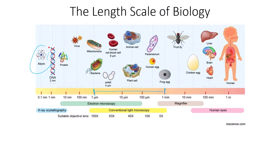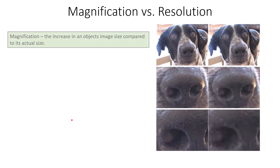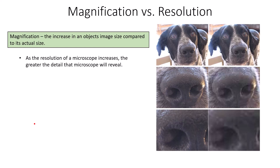What is the difference between magnification and resolution? They sound similar and are often used interchangeably, but magnification is the increase in an object's image size compared to its actual size. As we increase magnification we get closer and closer to the object — like a dog's nose getting progressively bigger. That is magnification.